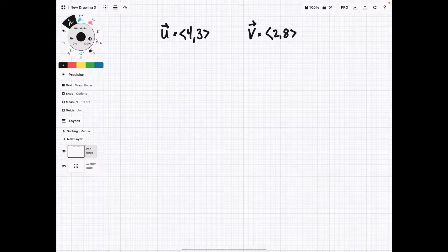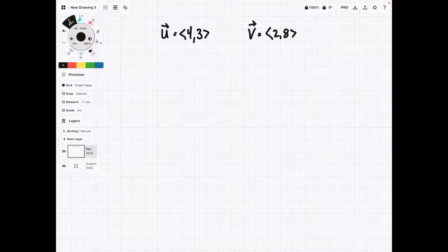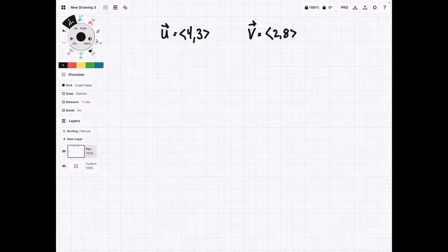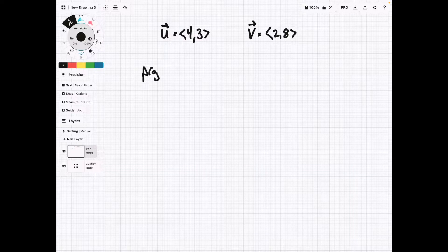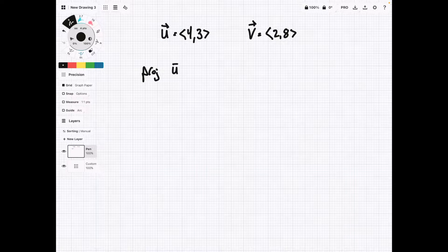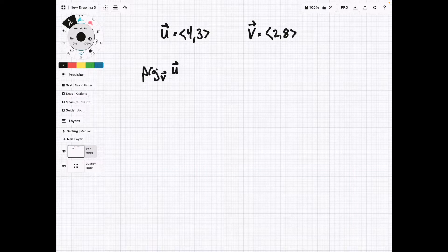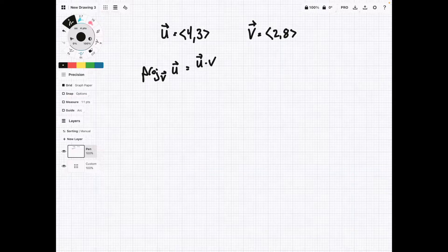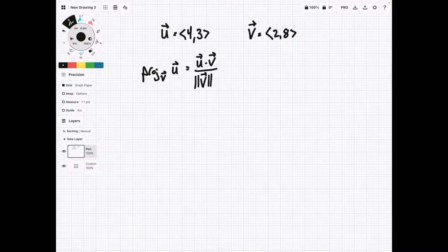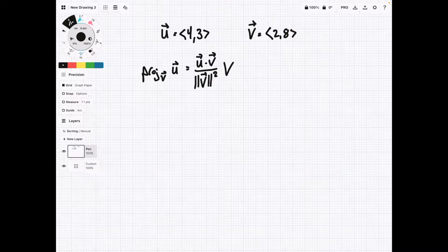So what we're going to do in the next part is just look at a few examples. For this first example here, let's say that we have vector u, which is 4, 3, and vector v, which is 2, 8. So we want to find the projection of u onto v.